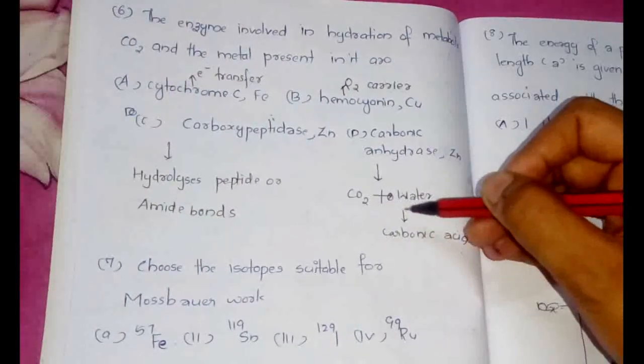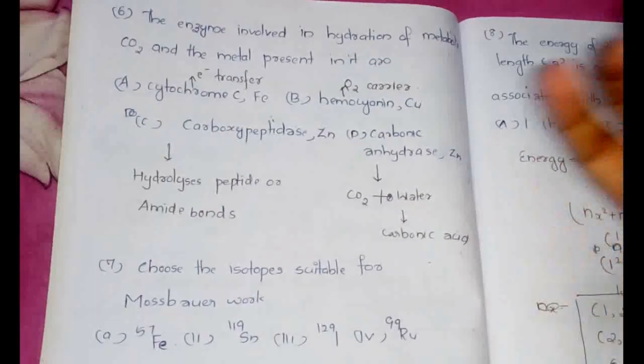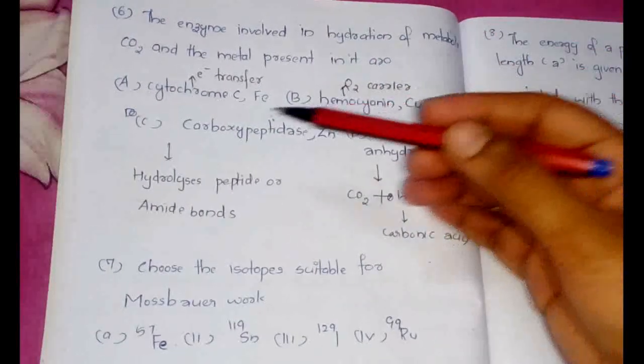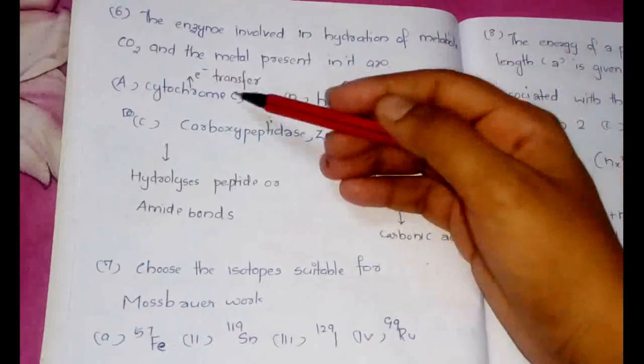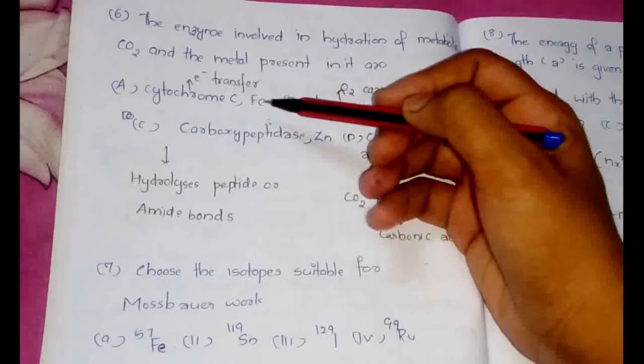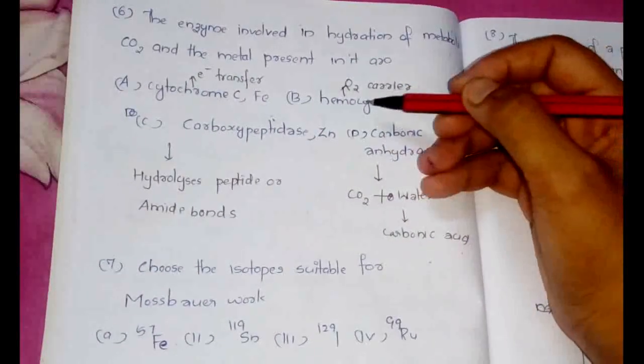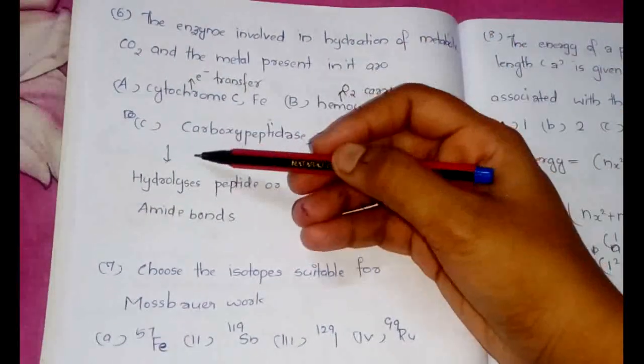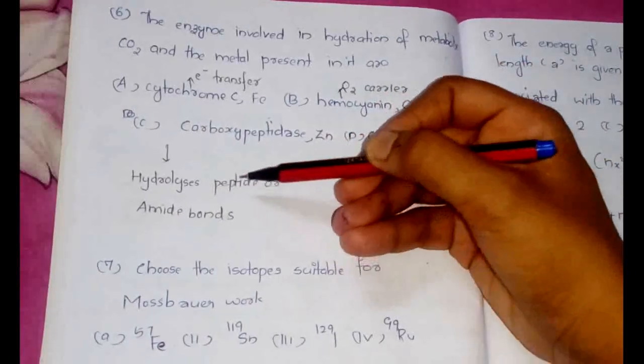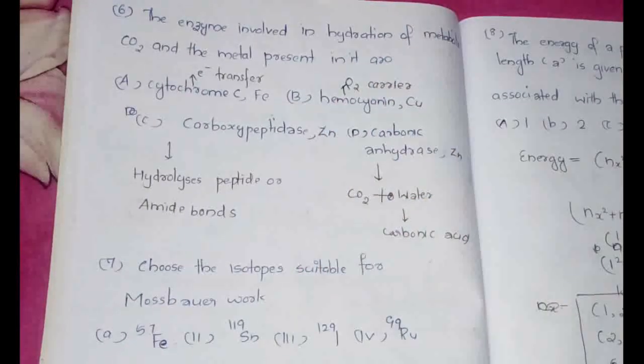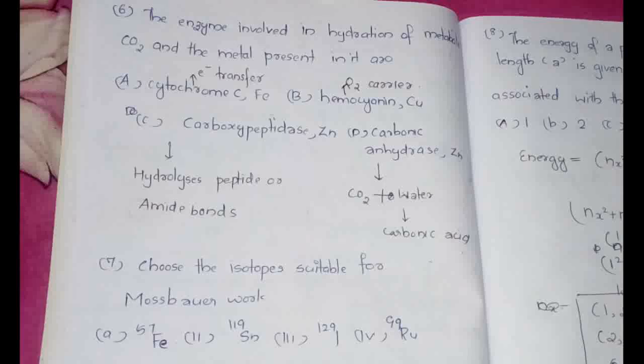Apart from this we can also study the functions of the other enzymes given here. Cytochrome c3 actually is an electron transfer, it is used for electron transfer. Hemocyanin is used as an oxygen carrier. And carboxypeptidase hydrolyzes the peptide or amide bonds. So keep this in mind, it is usually helpful if you make a chart of these things so that you can revise by the end of the exam. One question from this part is very sure and it is easily, we can easily get marks from this part.